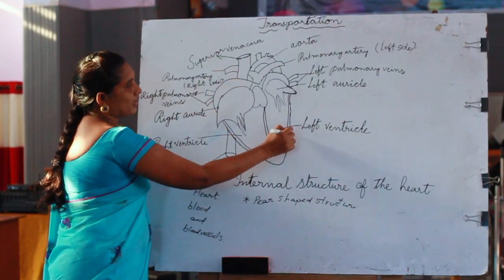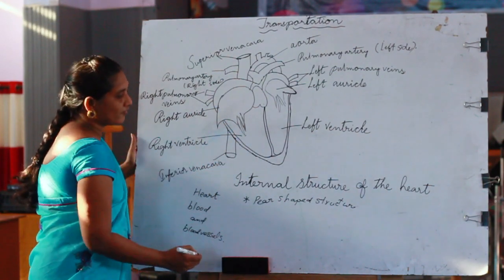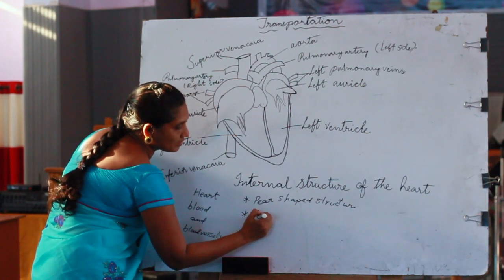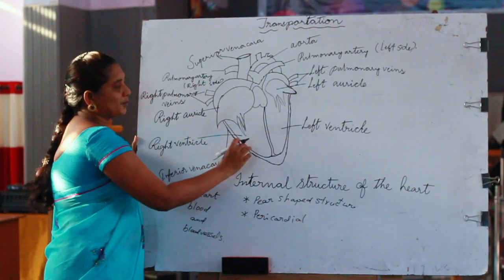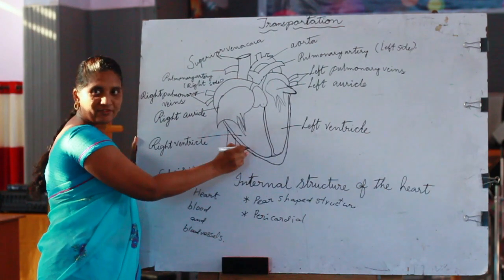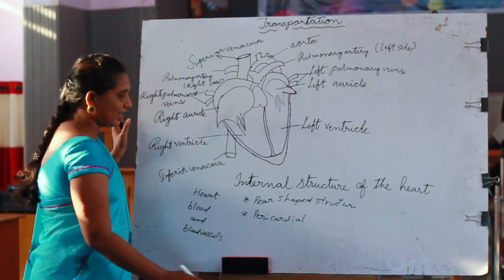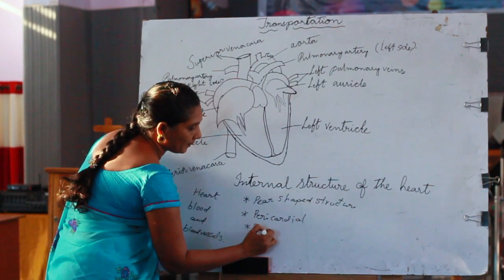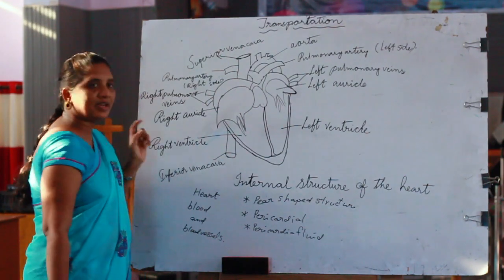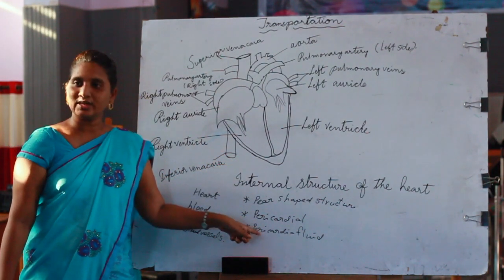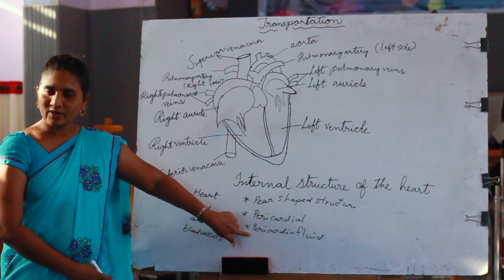Our heart is covered with two membranous layers, known as pericardial membranes. The space between the two pericardial membranes is filled with a fluid-like substance known as pericardial fluid. The pericardial fluid helps protect the heart from shocks.